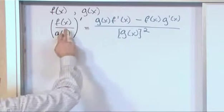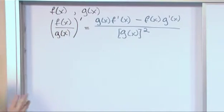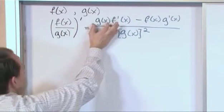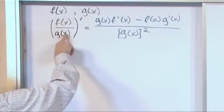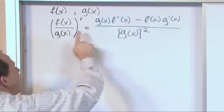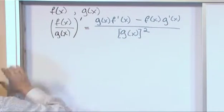Really, what you're doing is if you have two functions divided by one another, you take the bottom one times the derivative of the top one, minus the top one times the derivative of the bottom one, and divide the whole thing by the bottom one squared.